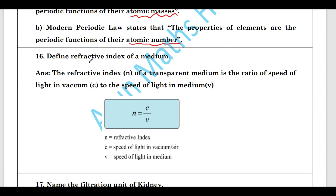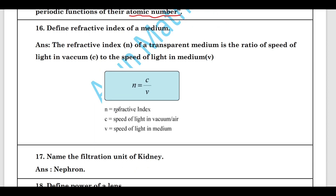Define the refractive index of a medium. The refractive index n of a transparent medium is the ratio of the speed of light in vacuum to the speed of light in the medium. Mathematically, n = c/v, where c is the speed of light in vacuum or air and v is the speed of light in the medium.